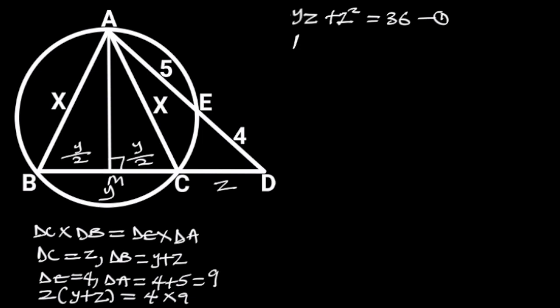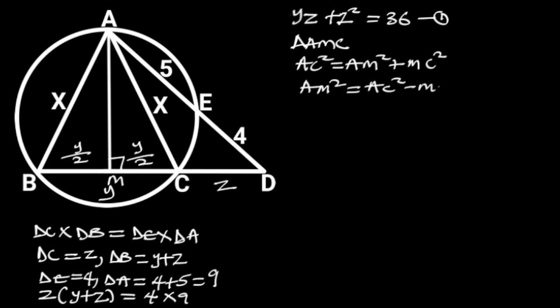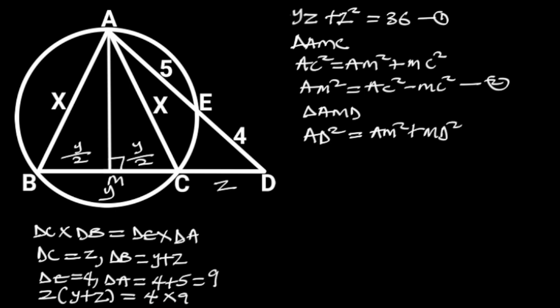Next, let's focus on triangle AMC. Triangle AMC is a right triangle. From Pythagoras' theorem, AC squared is equal to AM squared plus MC squared. Making AM squared the subject gives us AM squared is equal to AC squared minus MC squared. Let's call this equation 2. Now let's focus on triangle AMD. Triangle AMD is also a right triangle. From Pythagoras' theorem, AD squared is equal to AM squared plus MD squared. Making AM squared the subject gives us AM squared is equal to AD squared minus MD squared. Let's call this equation 3.